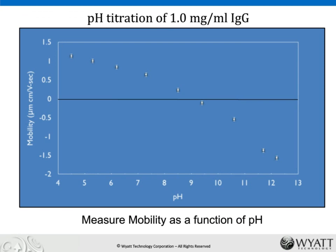You can take it a step further by making measurements at different pH values. With pH on the horizontal axis and measured mobility on the vertical axis, at low pH the molecule is positively charged with high mobility; at high pH it's negatively charged with high negative mobility; and somewhere in between it goes to zero — the classical definition of the isoelectric point (pI). In this case, we've measured a pI of 9.15.